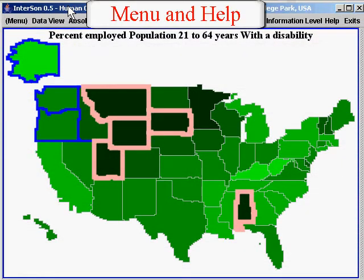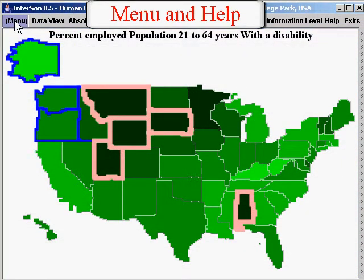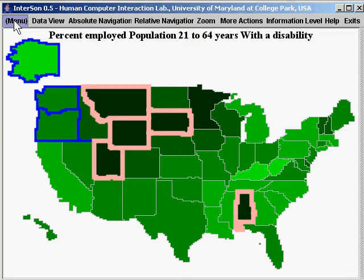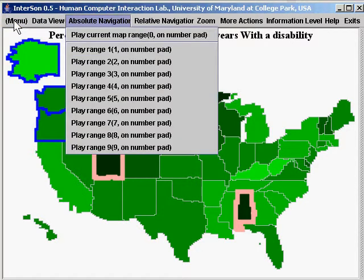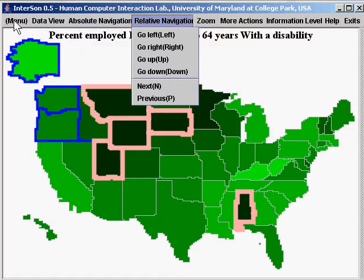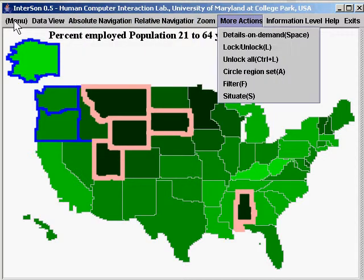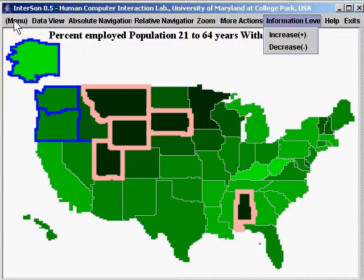Pressing F10 opens the menu, which can be navigated with the arrow keys. Each menu item links to a help message. Menu items include: data view, absolute navigation, relative navigation, zoom, more actions, and information level.